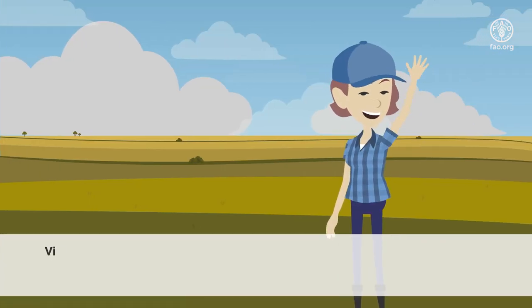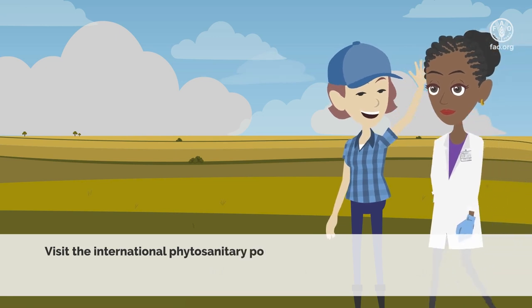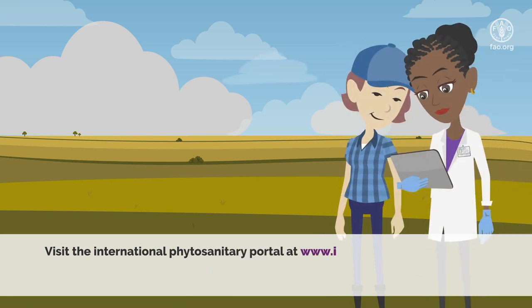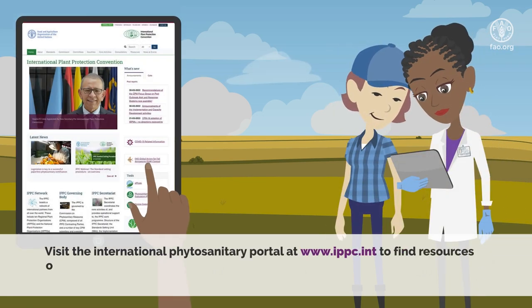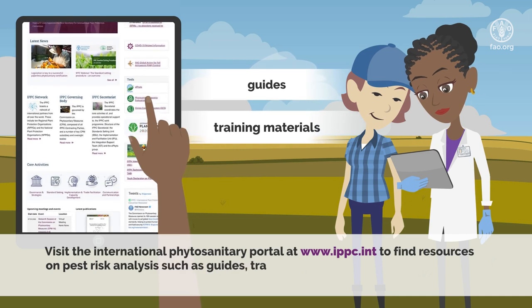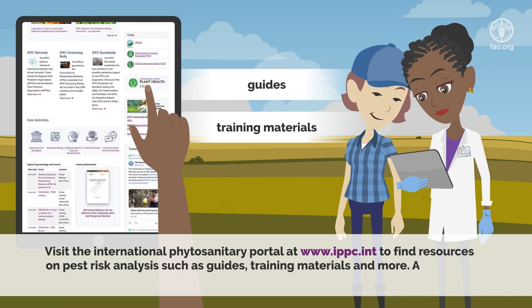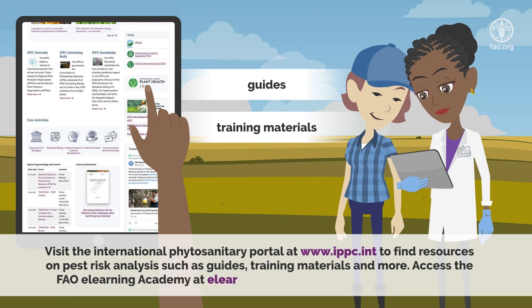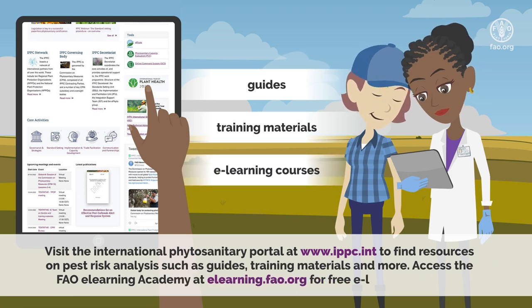Visit the international phytosanitary portal at www.ippc.int to find resources on pest risk analysis such as guides, training materials, and more. Access the FAO e-learning academy at elearning.fao.org for free e-learning courses.